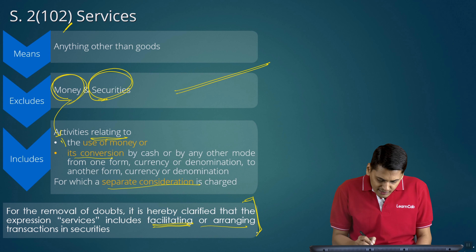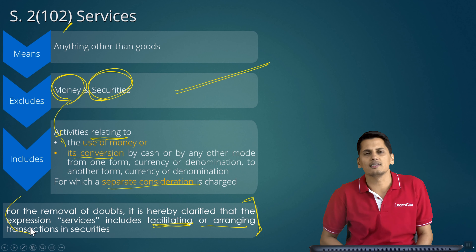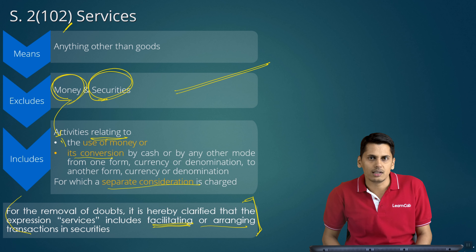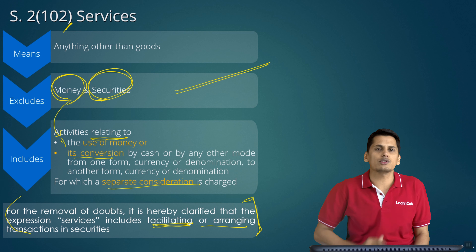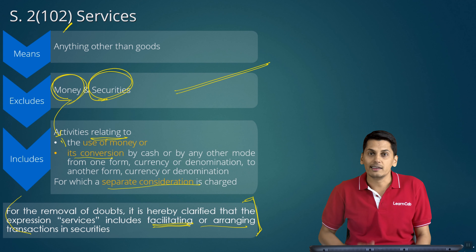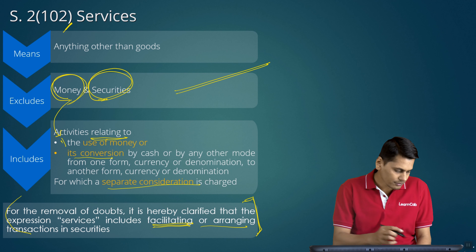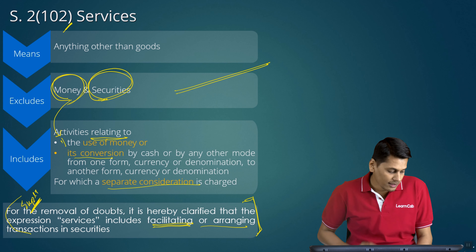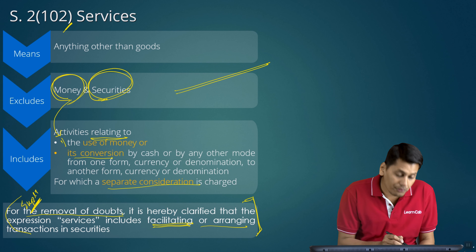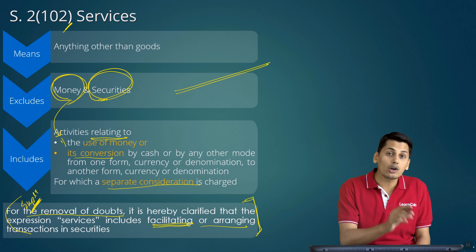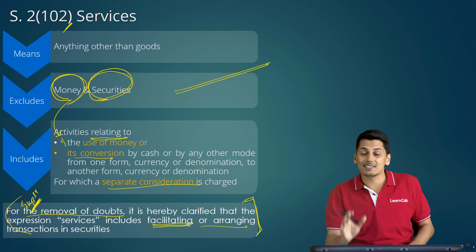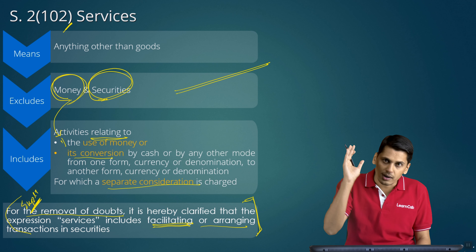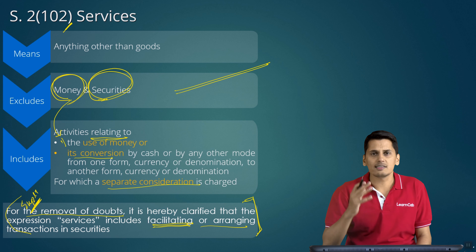This amendment is clarificatory in nature — it is not anything new. The understanding from the very beginning was the same. The explanation is added to Section 2(102) and starts with the words 'for the removal of doubts,' meaning even before this amendment the position of law remained the same. It is simply being clarified now.